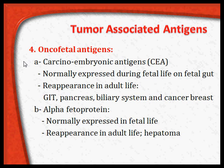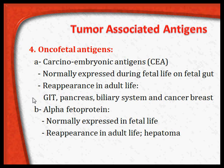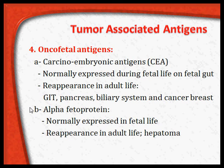Carcinoembryonic antigens are normally expressed during fetal life on the fetal gut and disappear after birth. They reappear in adult life in patients who have carcinomas of the GI tract, pancreas, biliary system, and breast. Another onco-fetal antigen is alpha-fetoprotein, which is also normally expressed in fetal life and disappears after birth.